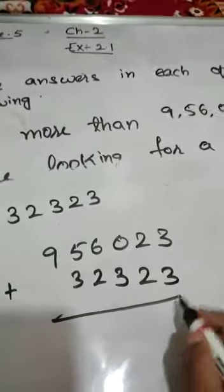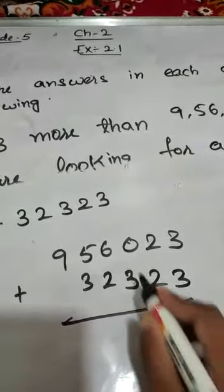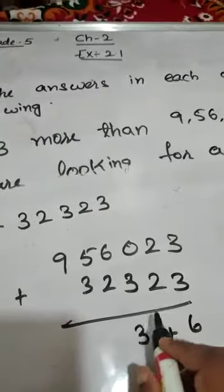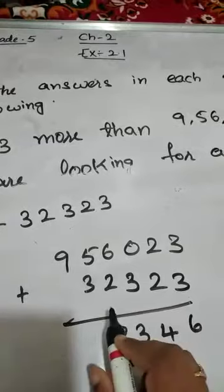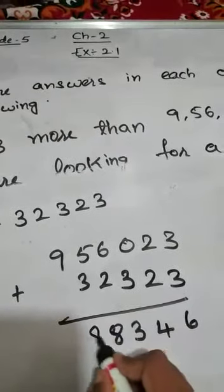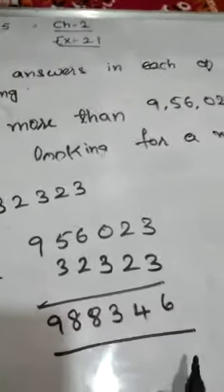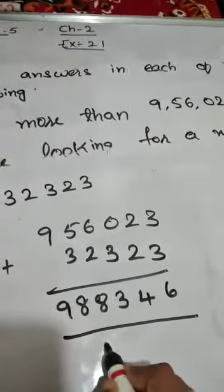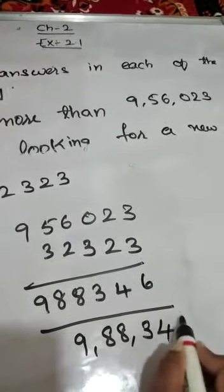So this is 3 plus 3, 3 plus 3 is 6, 6 plus 2 is 8, 5 plus 3 is 8, 9 will be as it is. So what answer we got here? 9,88,346.